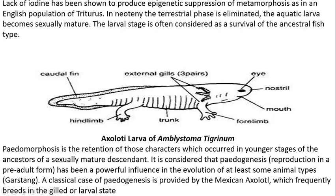A classical case of Pedogenesis is provided by the Mexican axolotl, which frequently breeds while retaining larval characteristics. The most common example of Neoteny and Pedogenesis is the axolotl larva of Ambystoma, also seen in Triturus.